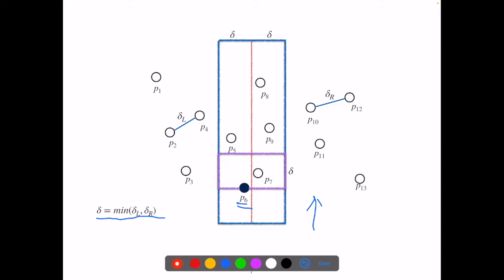Any points that have a distance to p6 less than delta must be contained in this purple box. So we can check each point in this blue rectangle from the bottom to the top and compute the distance to all other points that are contained in each point's purple box.